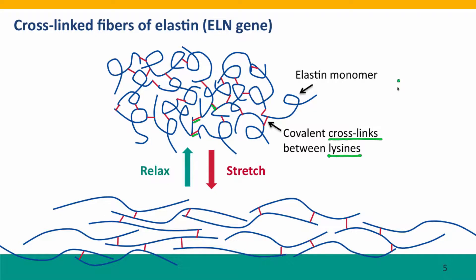When you pull on this tangle, it can stretch out — the individual elastin monomers stretch out. They don't come apart because they're held together by the cross-links. So even though you're pulling on one molecule, that stretch is transmitted along the length of the complex of elastins. So your skin can stretch, but when the pressure is released, your skin relaxes back into its normal shape. Of course, the older you get, the less well this works — but that's the basic principle of what elastin does.